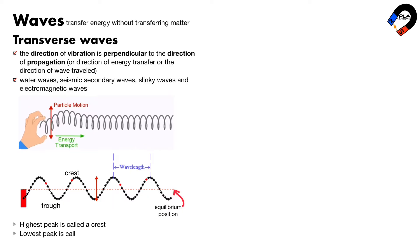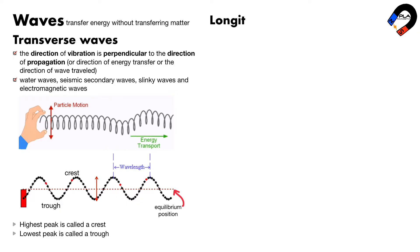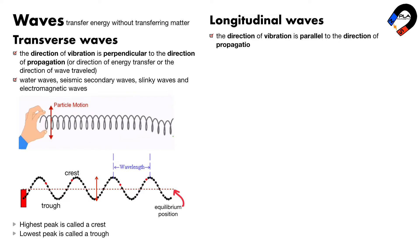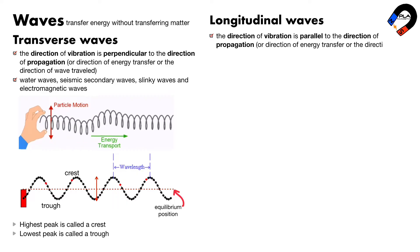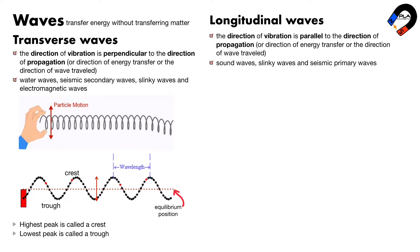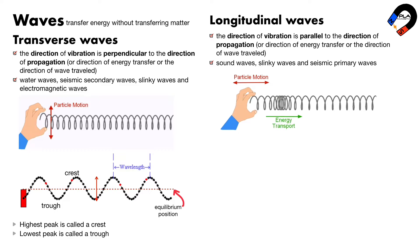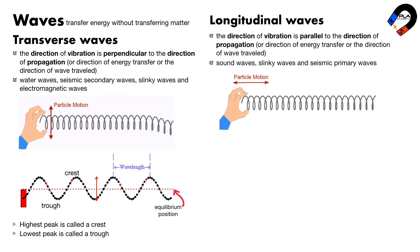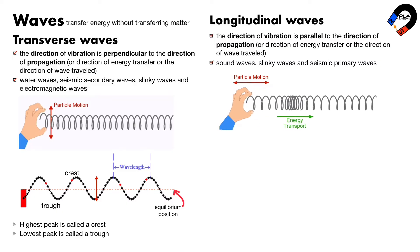In longitudinal waves, the direction of vibration is parallel to the direction of propagation, direction of energy transfer, or direction of wave travel. Examples include sound waves, slinky waves, and seismic primary waves. We can demonstrate a longitudinal wave by shaking the spring forward and backward.